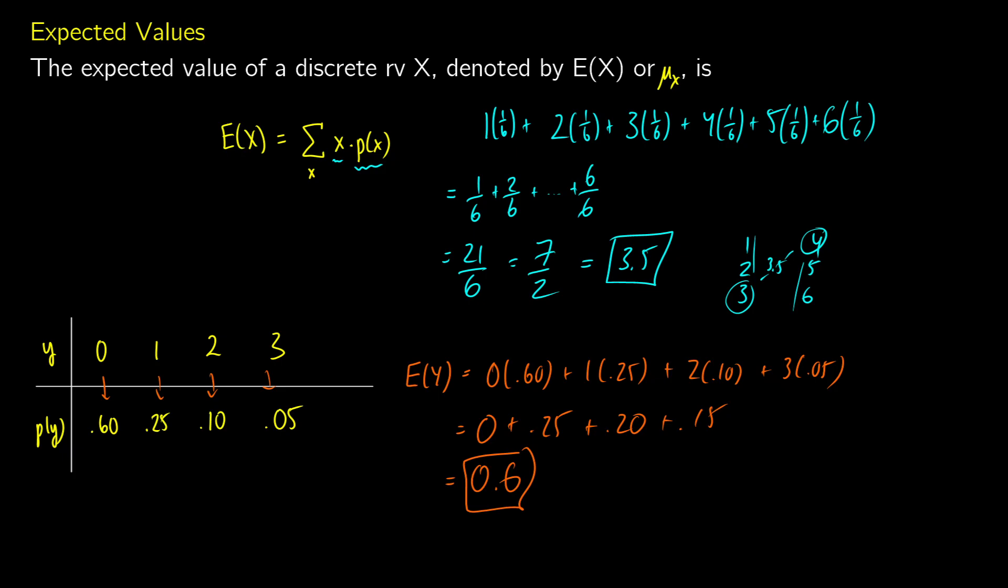So you could say if we were to pull people infinitely, we would get an average of about 0.6 people end up taking the course if that's what these y and p(y) values represent. So that's how we can do it with just regular discrete RVs using a table.